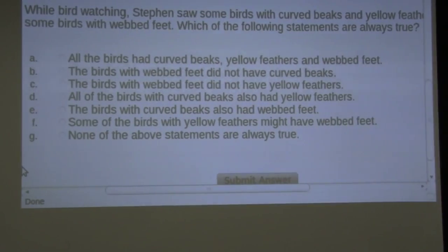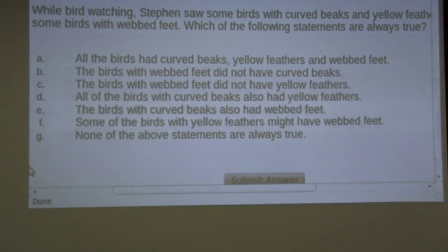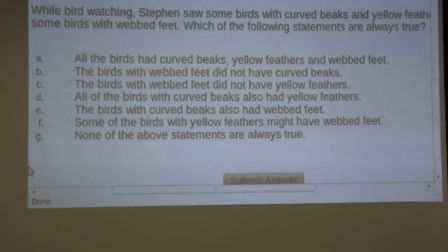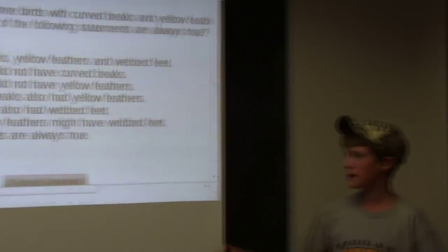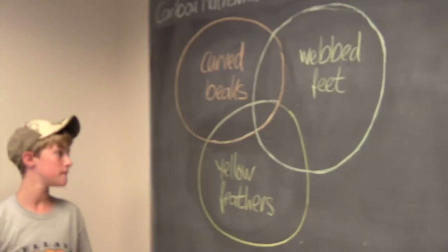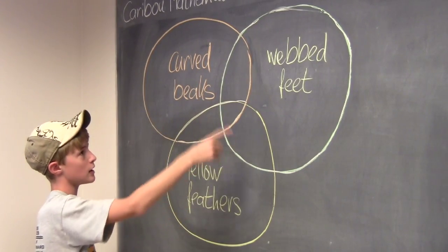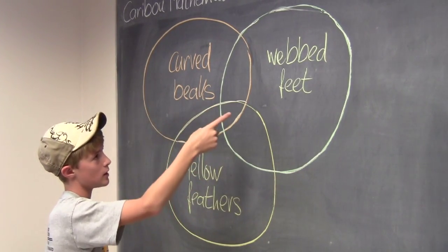So let's look at F. Some of the birds with yellow feathers might have webbed feet. That has to be true, because the key word is might. So they may overlap yellow feathers and webbed feet. So F is true.